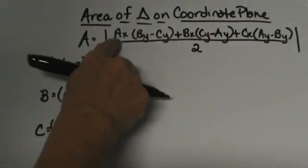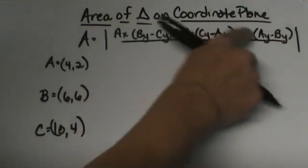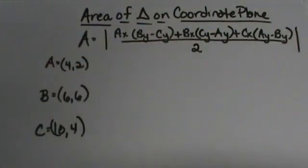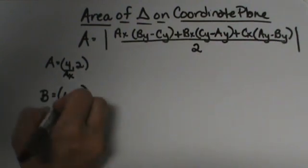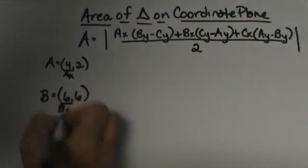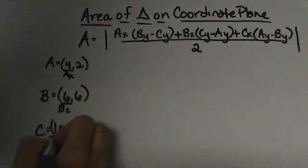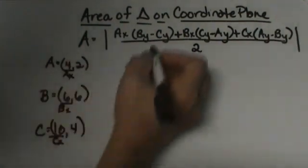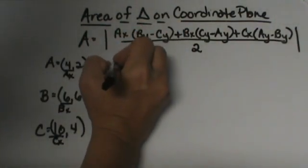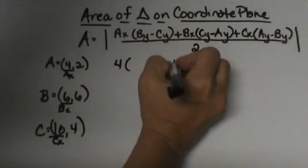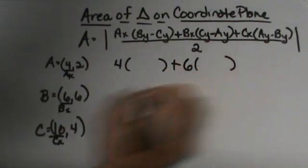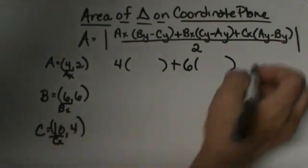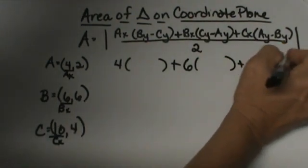Notice that I have the x coordinates labeled here, here, and here. I'm going to go over here and note that. The 4 is Ax, the 6 is Bx, and the 10 is Cx. I'm going to plug those x coordinates in. So I'm going to get 4 times something plus 6 times something plus 10 times something.